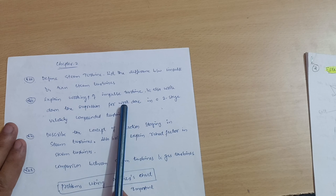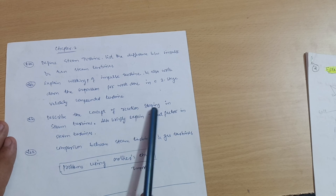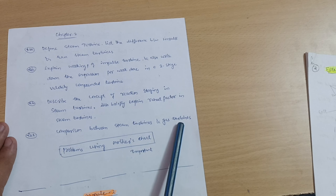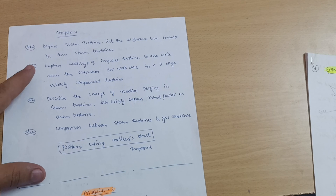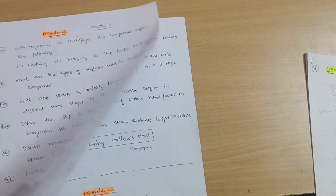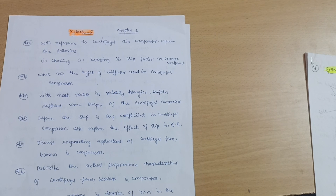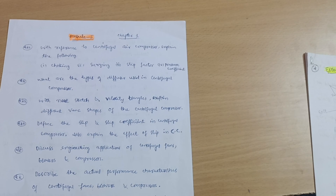The second chapter of Module 5 is steam turbines: define a steam turbine; list the differences between impulse and reaction steam turbines; explain the working principle of an impulse turbine and write down the expression for work done in a two-stage velocity compounded turbine — most important derivation; describe the concept of reaction staging in steam turbines and briefly explain reheat factor; comparison between steam turbines and gas turbines; and practice some problems using Mollier's chart. I prefer you go through this steam turbine chapter and try some problems on Mollier's chart. I hope this content will help you in passing this subject — and not only passing, those who want to score can refer to these questions. Share this video with all your friends struggling in this subject. I wish you all the best for your examinations.